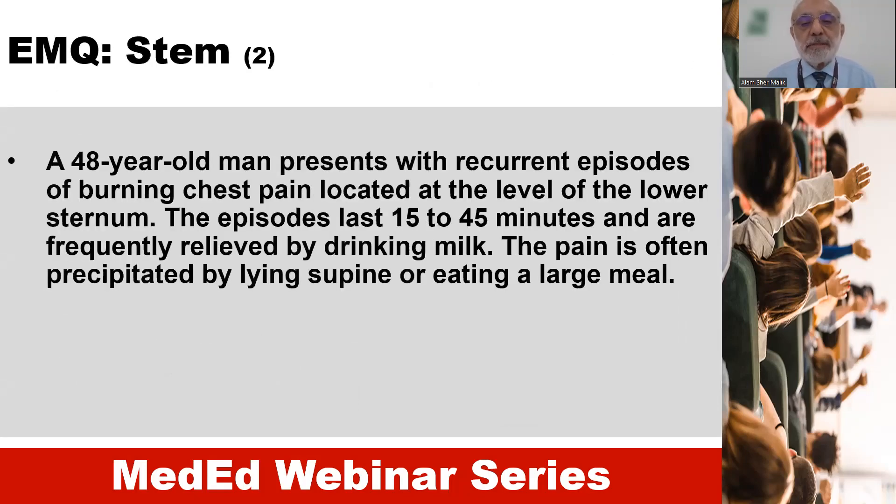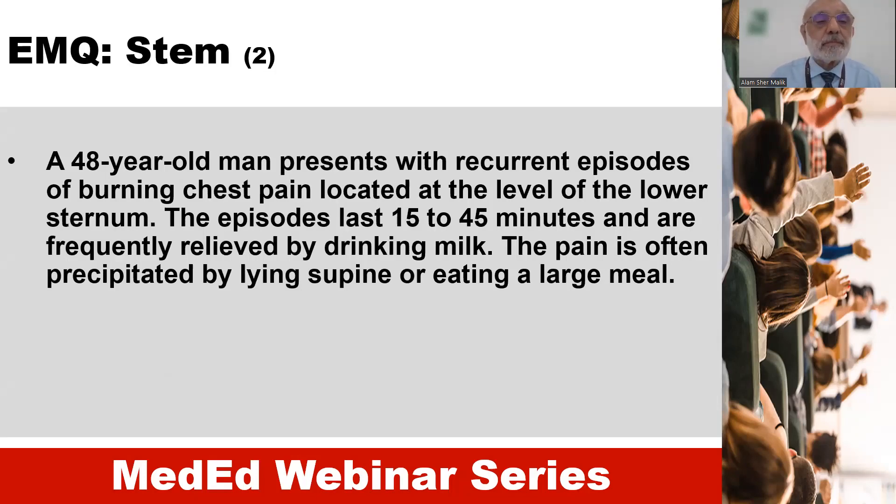The most appropriate choice in this case would be dissecting aortic aneurysm. The second stem of this question relates to a cause of chest pain originating from the gastrointestinal system.